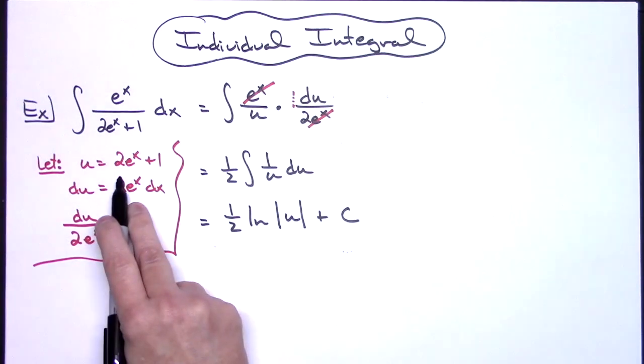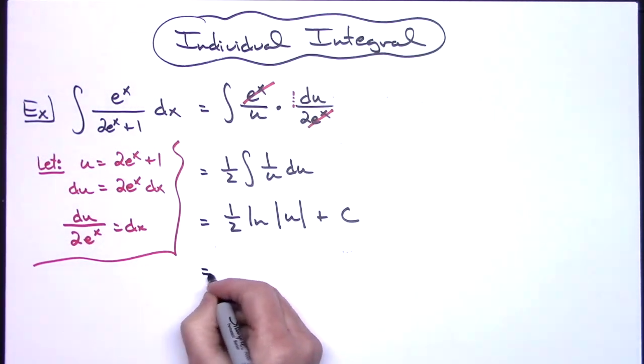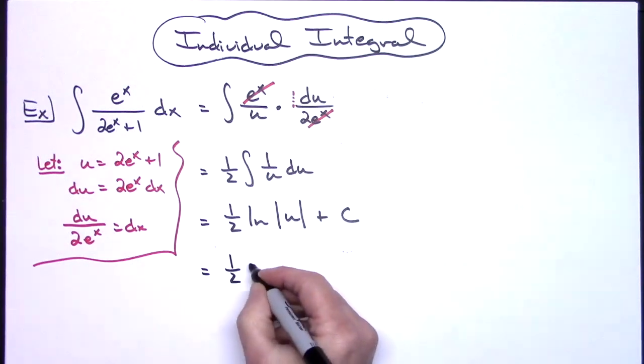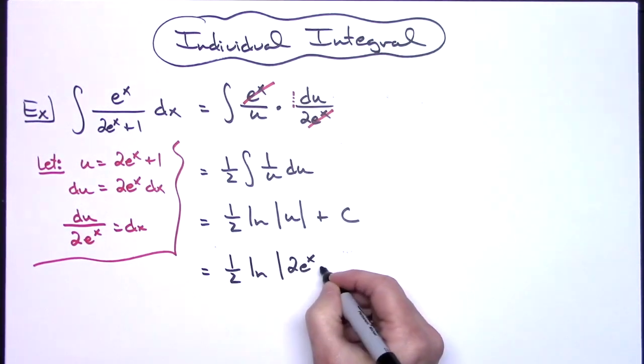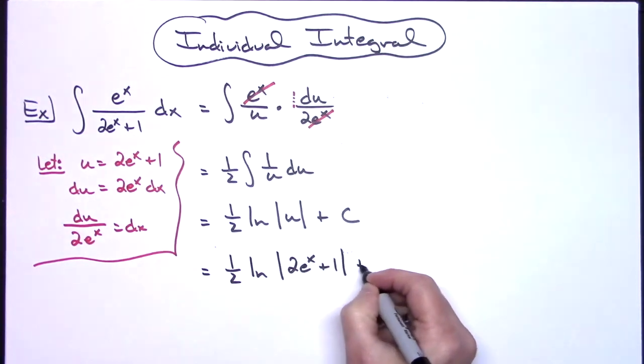I can take the u and replace it with what I originally said it was going to be equal to. So I'll have a one half natural log absolute value 2e to the x plus 1 and then plus c.